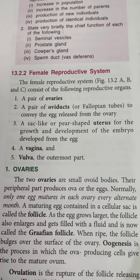When ripe, the follicle bulges over the surface of the ovary. Oogenesis is the process in which the ova-producing cells give rise to the mature ovum — we read about spermatogenesis previously, and this is oogenesis. Ovulation is the rupture of the follicle releasing the egg, and the released egg is picked up by the fimbria or cilia of the oviducal funnel of the oviduct.